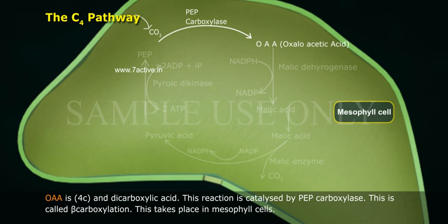This process is called beta carboxylation, and it takes place in the mesophyll cells.